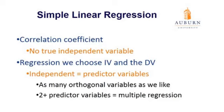With regression, we're saying that one variable predicts another variable — that one variable is influencing another, although it's not truly a causal relationship. So we have to choose one of our variables to be the independent variable, which we call the predictor variable. Independent variable and predictor variable are synonymous. With regression, we choose one of our variables — it doesn't really matter which, since it's based on correlation with no causal relationship — and we call it the independent or predictor variable.